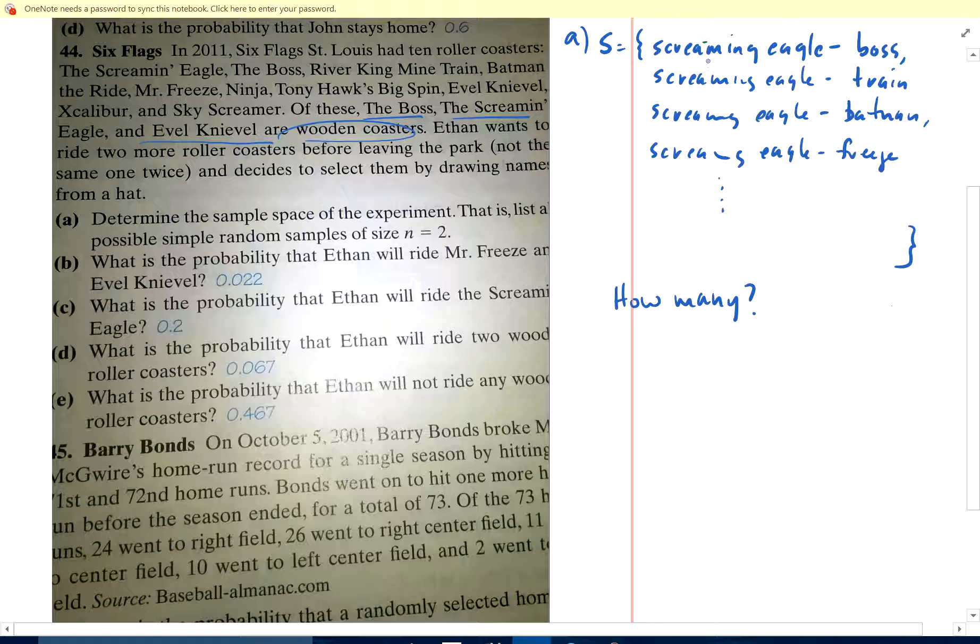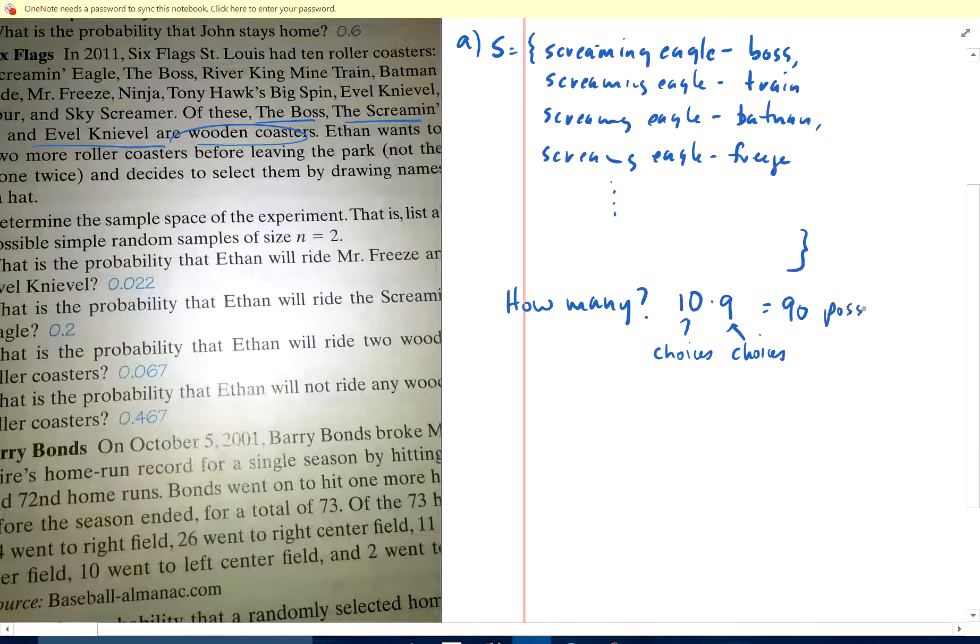So how many choices am I going to have for the first ride? I've got ten different rides for the first ride. And how many choices do I have for the second? I've got nine, because I'm not repeating. So I've got ten different options for the first ride and nine choices for the second ride. So this is choices for the first and this is choices for the second. I've got a total of 90 possible outcomes.